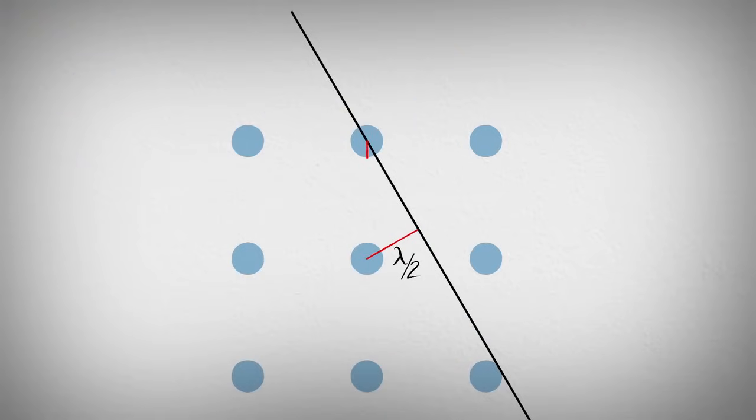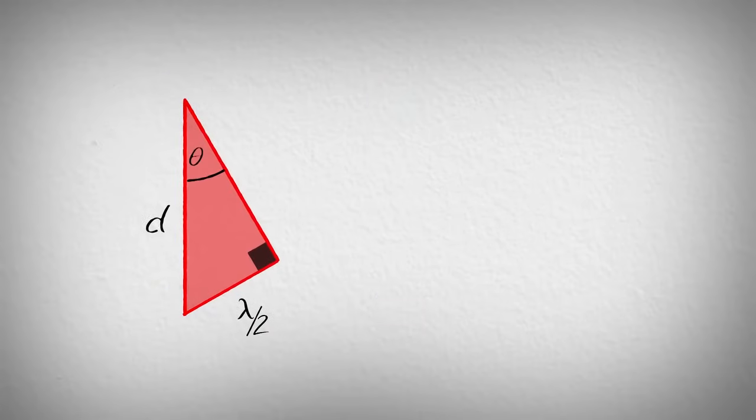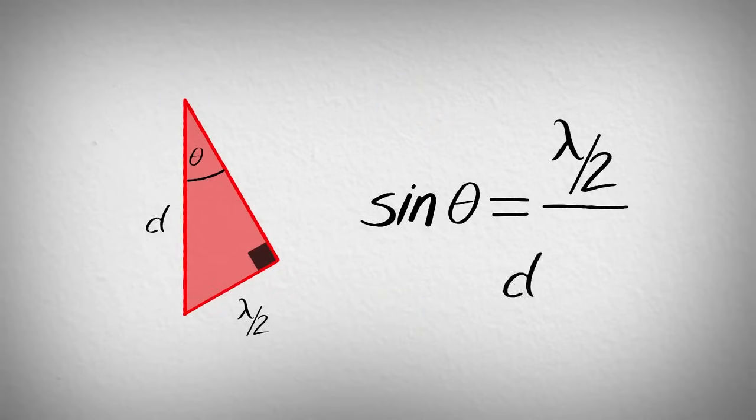The exact angle at which diffraction occurs can be determined from the red triangle. The angle at the top is theta, half the angle between the incident and scattered beams. The long side is the distance between the atomic planes, and the short side we know is one half of a wavelength.